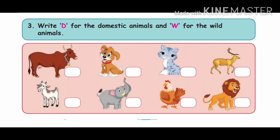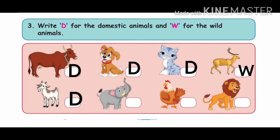Write D for domestic animals and W for wild animals. Cow — D. Dog — D. Cat — D. Deer — W. Goat — D. Elephant — W. Hen — D. Lion — W.